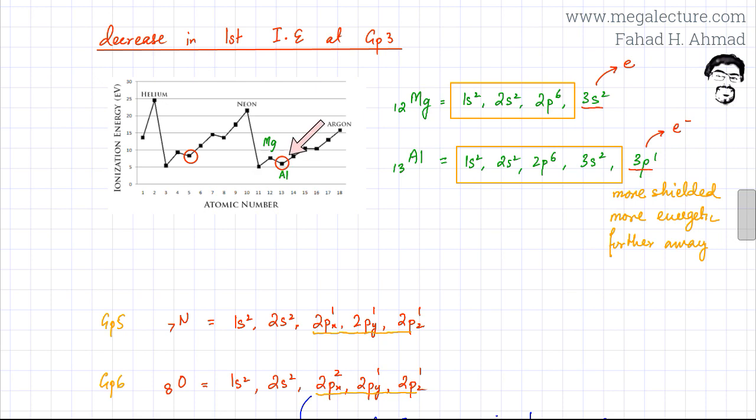Hence, the ionization energy of aluminum decreases. I've also written down the reasons. This electron over here is more shielded. You have more subshells coming in between the nucleus and this electron. It is more energetic - it's a higher energy p orbital. The electron is more energetic and the last one is further away from the nucleus.